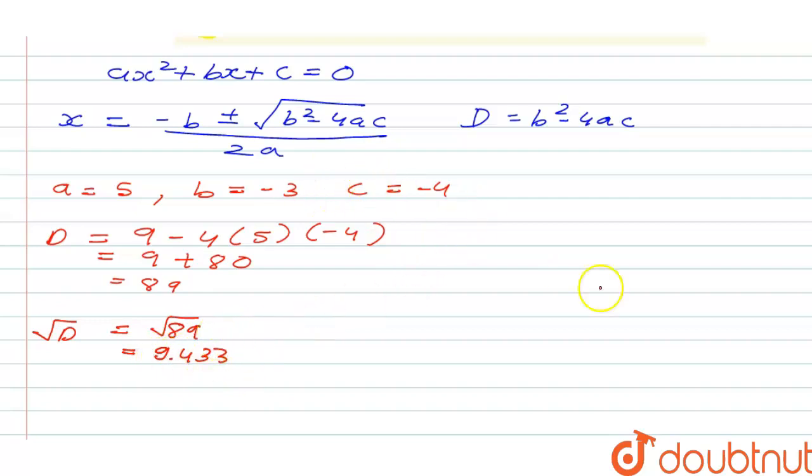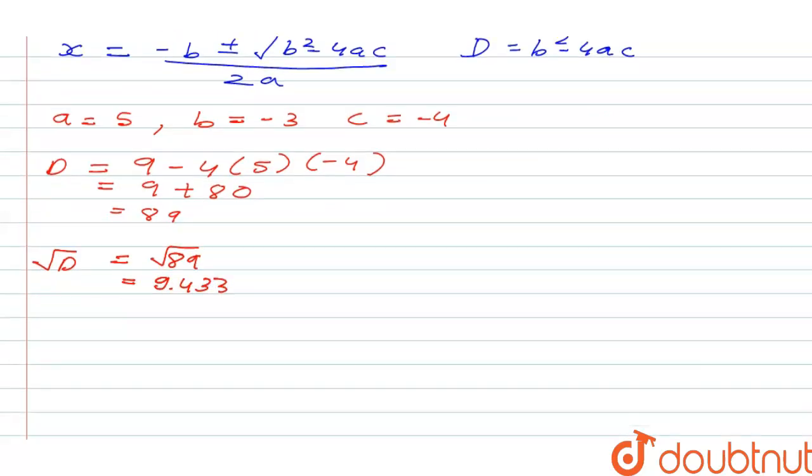Now we are going to put the value for x. So x is minus b plus minus under root D. So minus of -3 is positive 3, so 3 ± 9.433, and under root D is 9.433 upon 2a that means 2×5 that is 10.